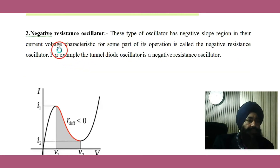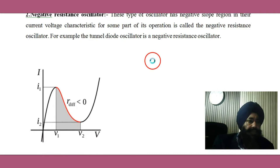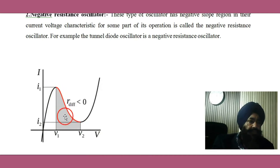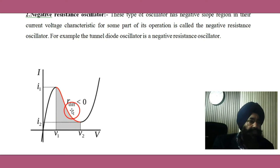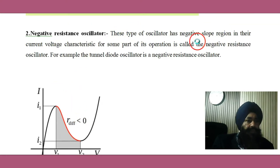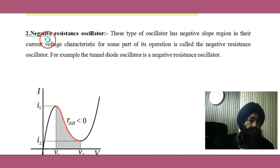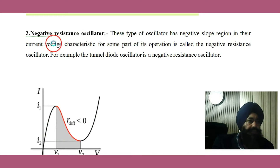Then we have negative resistance oscillators. There are some devices that exhibit a particular voltage-current relation where voltage is increasing but current is decreasing — that is against Ohm's law, which tells us V and I are proportional. This region is called the negative resistance part. These types of oscillators have a negative slope region in the current-voltage characteristics, so they are called negative resistance oscillators.